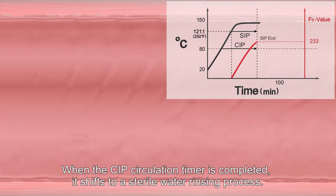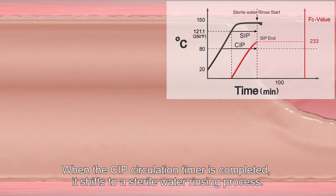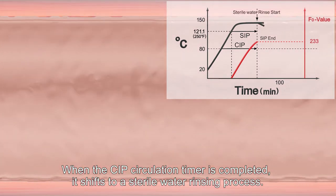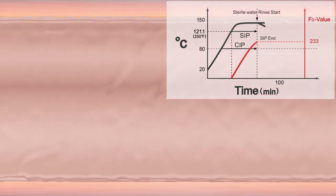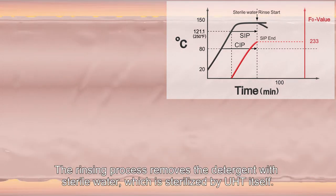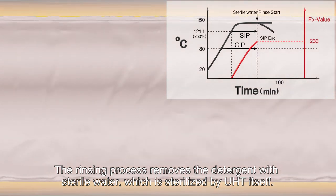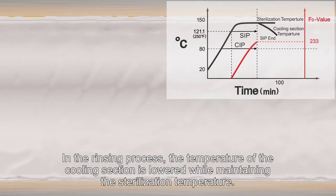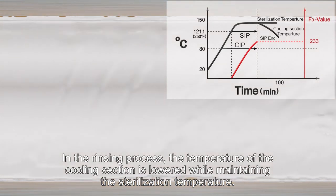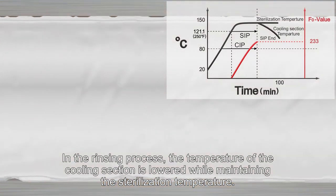When the CIP circulation timer is completed, it shifts to a sterile water rinsing process. The rinsing process removes the detergent with sterile water, which is sterilized by UHT itself. In the rinsing process, the temperature of the cooling section is lowered while maintaining the sterilization temperature.